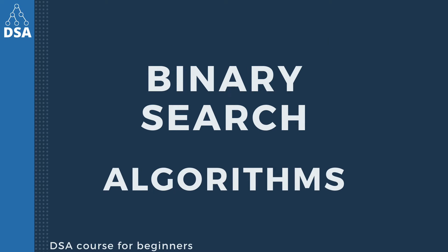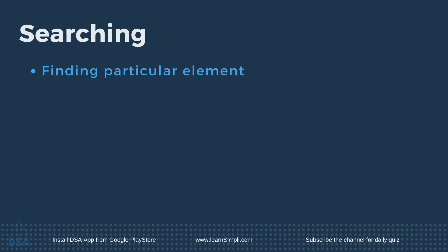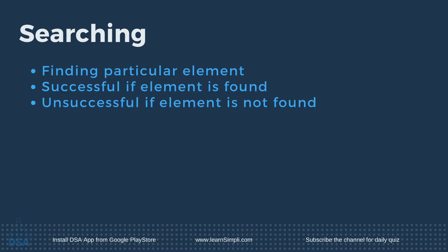We already know that searching is the process of finding some particular element in the list. If the element is present in the list, the process is called successful and it returns the location of that element. Otherwise the search is called unsuccessful.